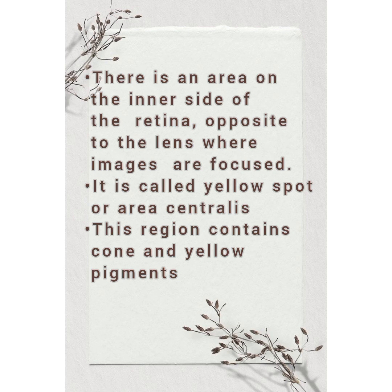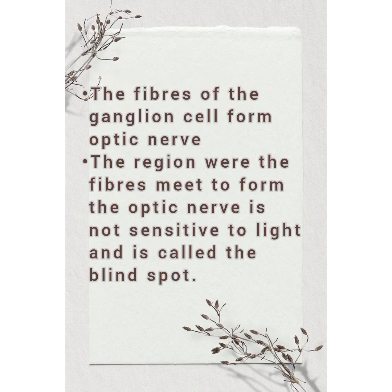There is an area on the inner side of the retina opposite to the lens where images are focused. It is called the yellow spot or area centralis. This region contains cones and yellow pigments. The fibres of the ganglion cells form the optic nerve. The region where the fibres meet to form the optic nerve is not sensitive to light and is called the blind spot.